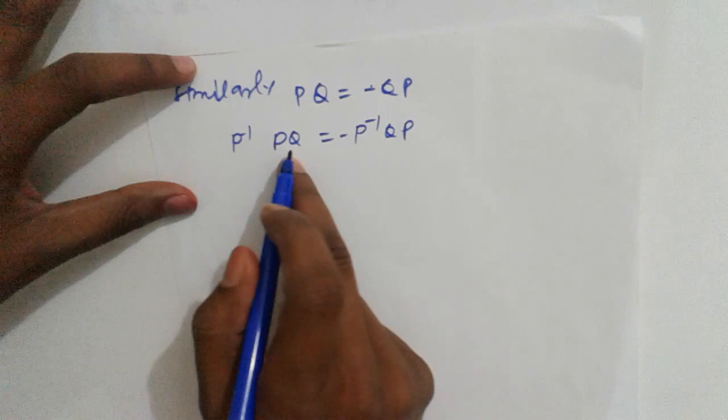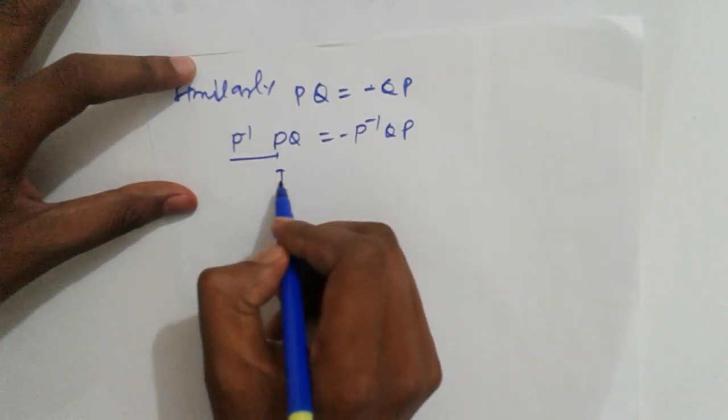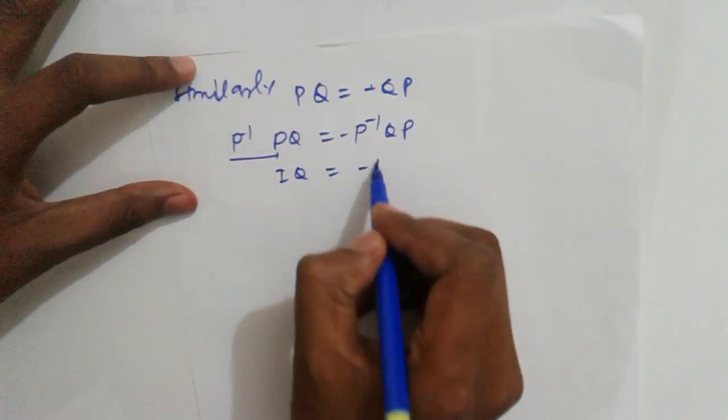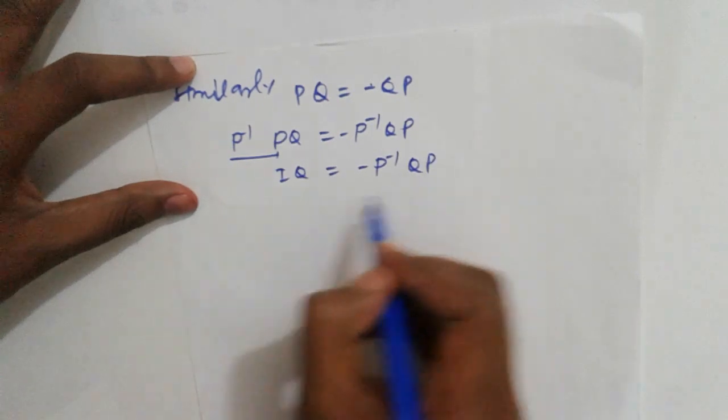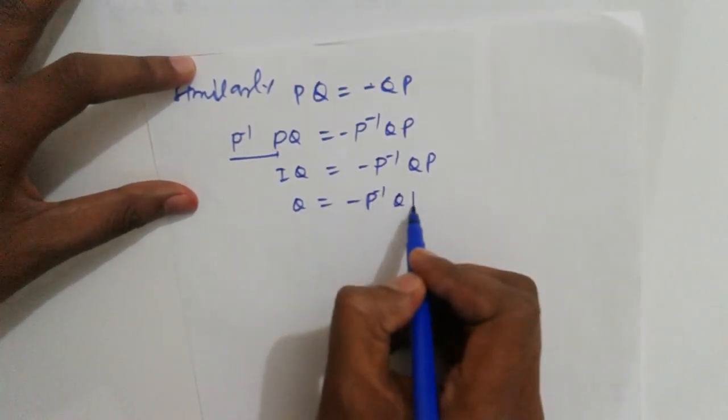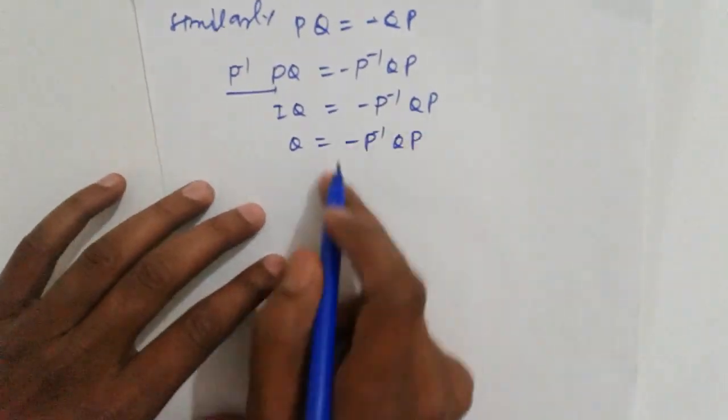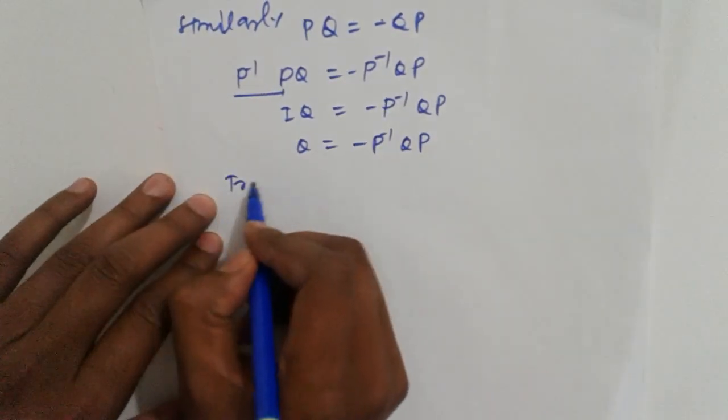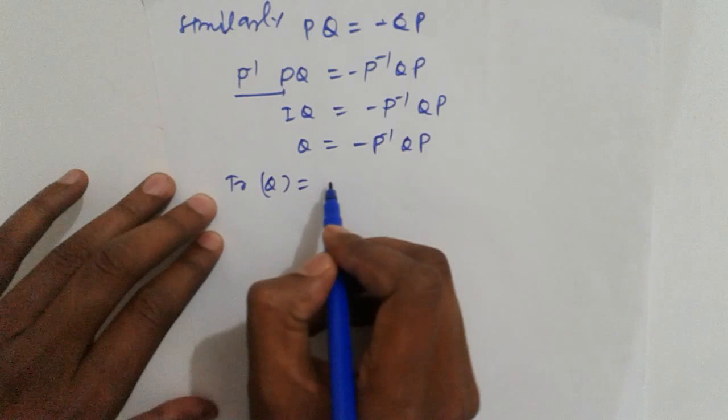Taking the trace: IQ equals minus P inverse QP. Otherwise, Q equals minus P inverse QP. So trace of Q equals minus trace of P inverse QP.